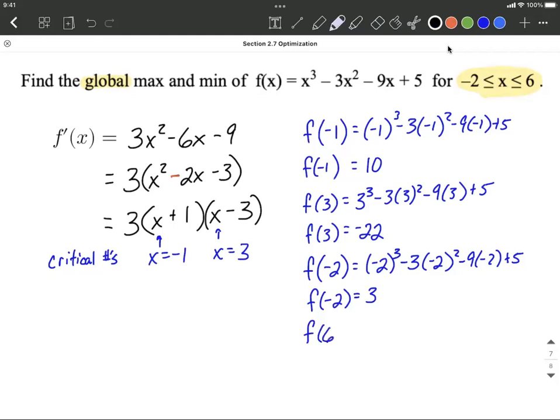And f of 6, 6 cubed minus 3 times 6 squared minus 9 times 6 plus 5, f of 6 works out to be 59.